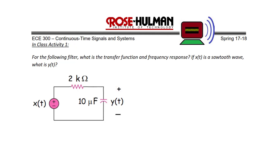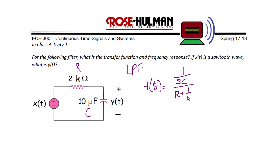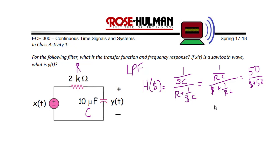In-class activity one: for the following filter, what is the transfer function and frequency response? And if x(t) is a sawtooth wave, what is y(t)? The sawtooth wave is the same ramp wave used in our prior examples. We have an RC circuit that should look familiar — we've done several analyses of it. Calling the components R and C, we can immediately see this is again a low pass filter where the transfer function h(s) equals (1/sC) divided by (R plus 1/sC), which simplifies to (1/RC) divided by (s plus 1/RC). Substituting in the values for R and C, this gives 50 over (s plus 50), a low pass filter with a cutoff of 50 radians per second.